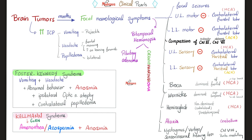It can press on the cerebellum leading to ataxia and loss of balance. It can press on the brain stem leading to nystagmus, vertigo, and sensorineural hearing loss — especially if this happened at the pontomedullary junction near the vicinity of cranial nerve number 8, the vestibulocochlear nerve.